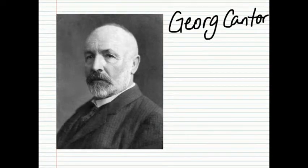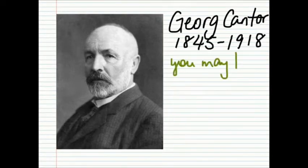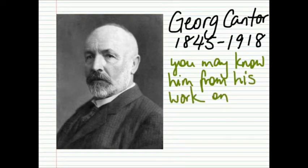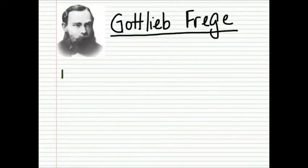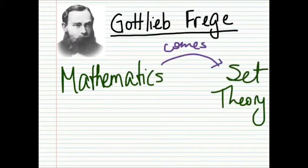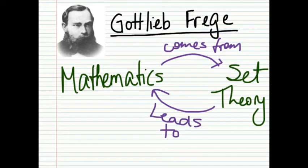Set theory was the brainchild of one logician, George Cantor. In particular, his original set theory, known today as naive set theory, was further developed upon by Gottlieb Frege, a German mathematician slash logician, as the basis of mathematics, where everything about mathematics was logically derived from set theory.